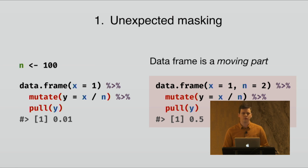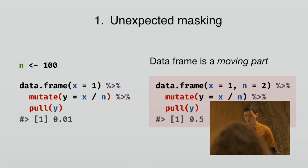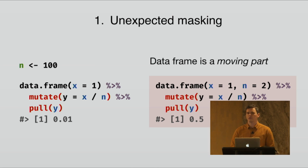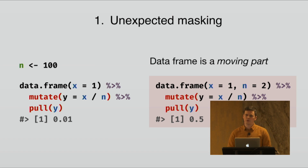If you are using the same code with different data frames, maybe they don't contain the same columns. And if you get a data frame that has a column N, then the column has precedence over the object in the workspace — the column masks the objects in the workspace and you'll get the wrong result.